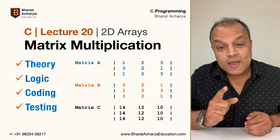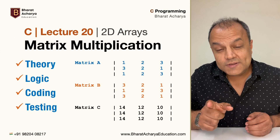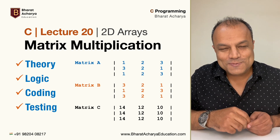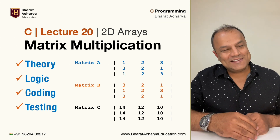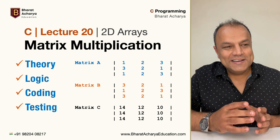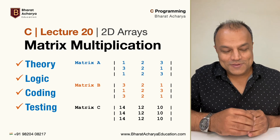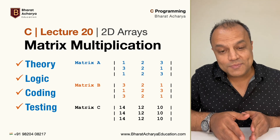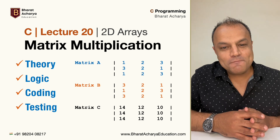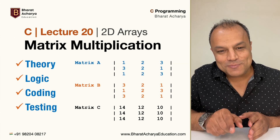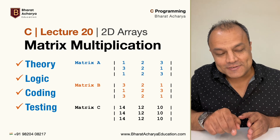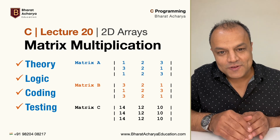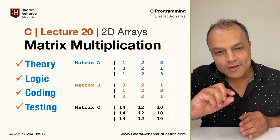Why am I saying 'like a pro'? I've seen many students — and in fact many teachers — taking the shortcut in this program by pre-defining the size of the matrix. If somebody's teaching you to multiply a 3x3 matrix by a 3x3 matrix, that person is just fooling you, because that program will work only for that size. The moment you change the size, the program will fail because it doesn't have that third inner loop.